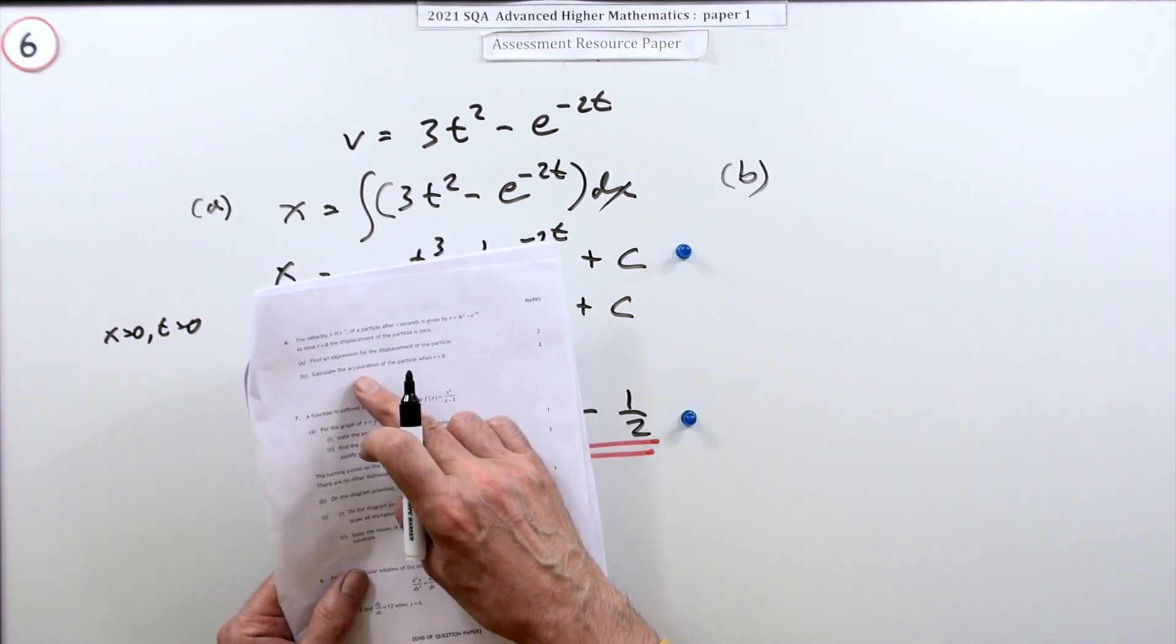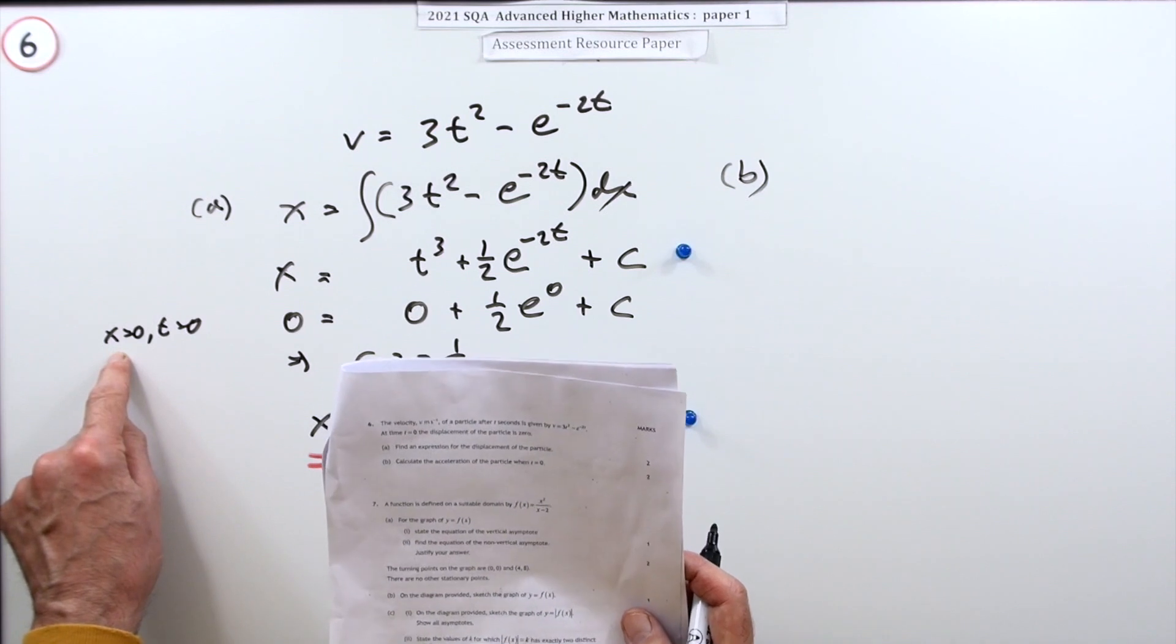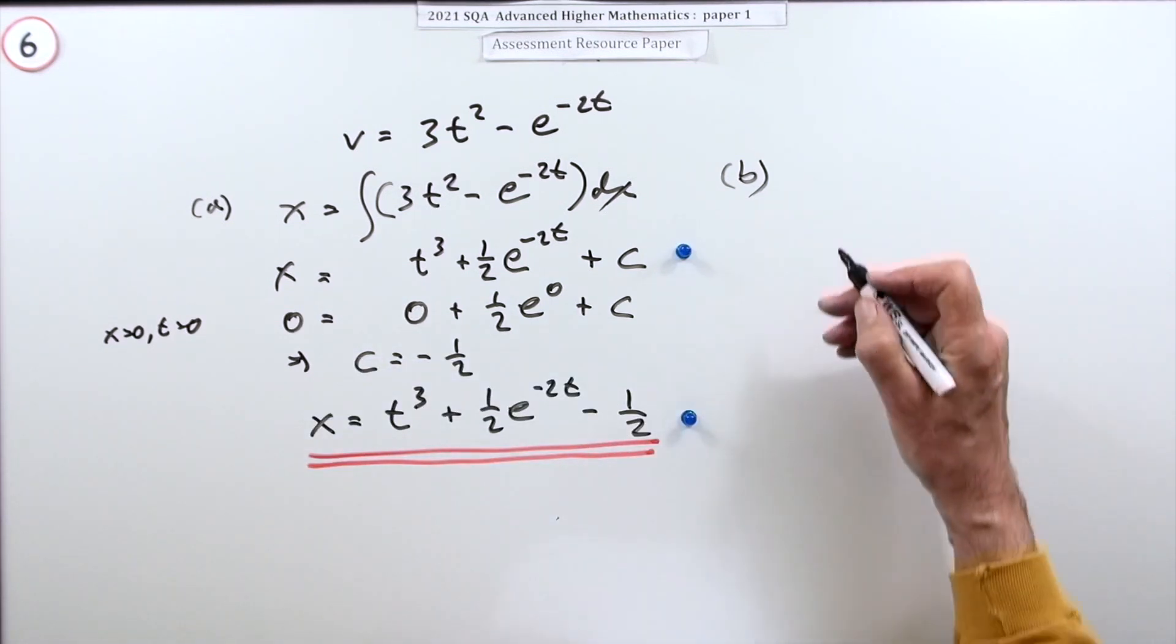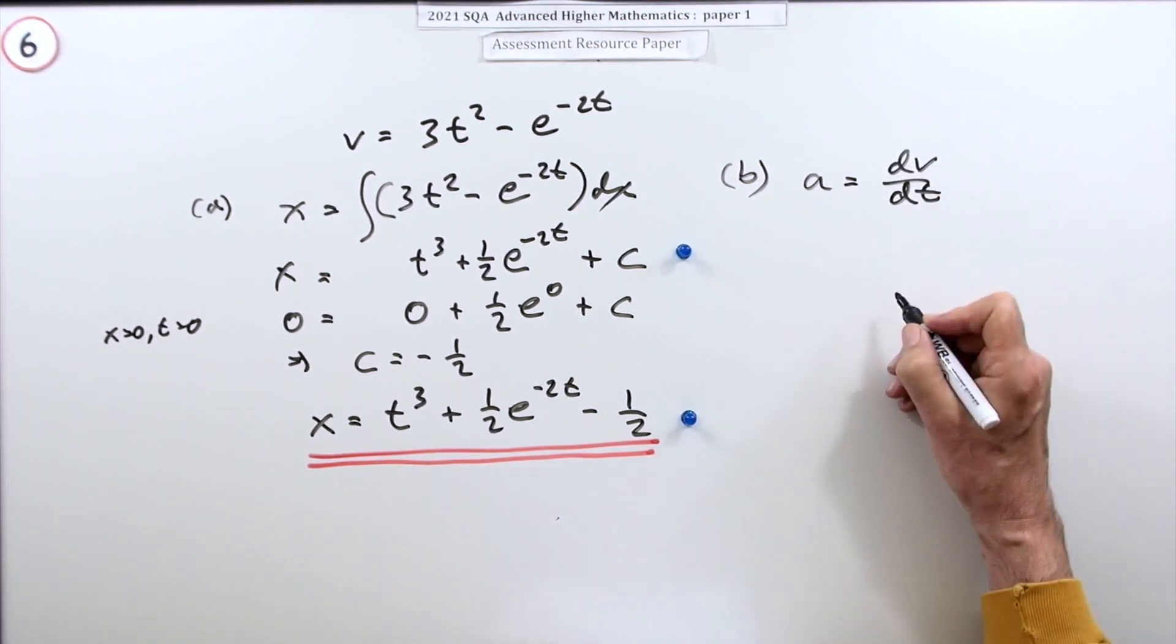In part (b), what's the acceleration at t = 0? Well, you know the displacement at t = 0 was zero. What was the acceleration? To get the acceleration, you differentiate the rate of change of the velocity, so it just means I differentiate this.